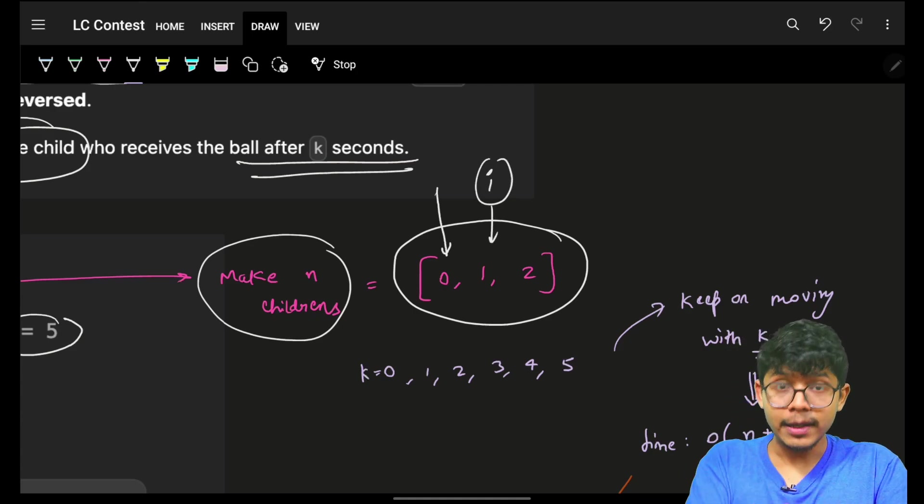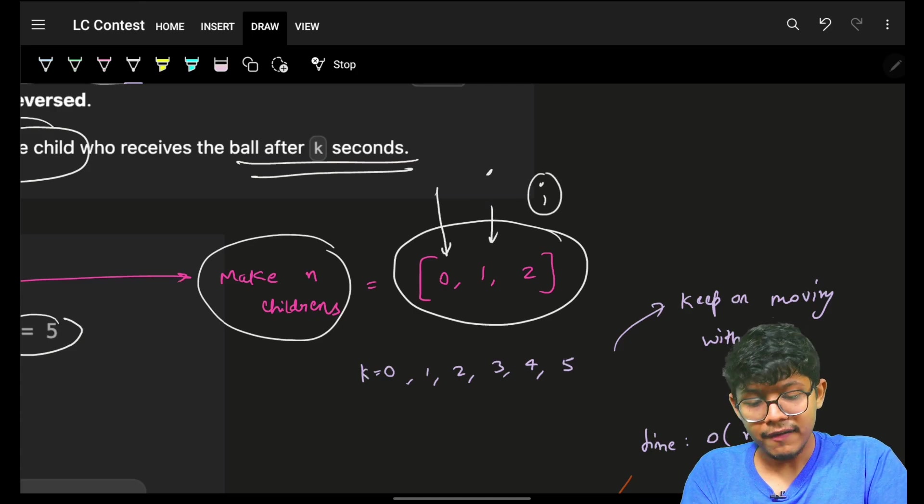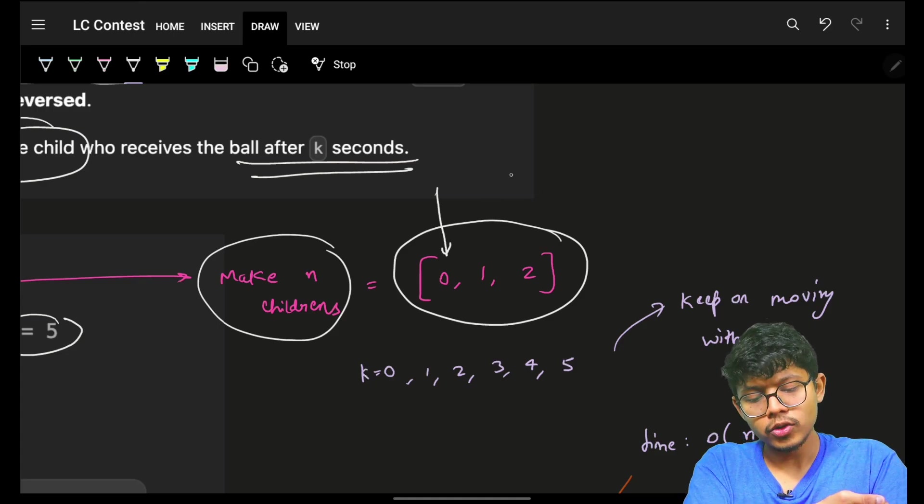Again, k movement, next index i. When you have reached the end, just keep on coming back. Okay, i here, i here, i here.